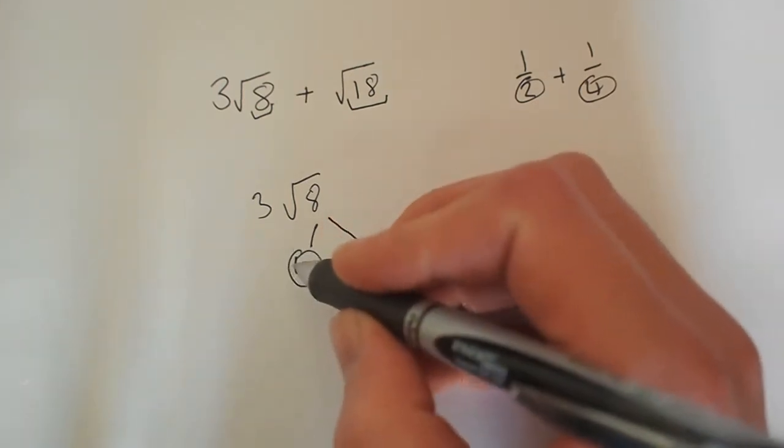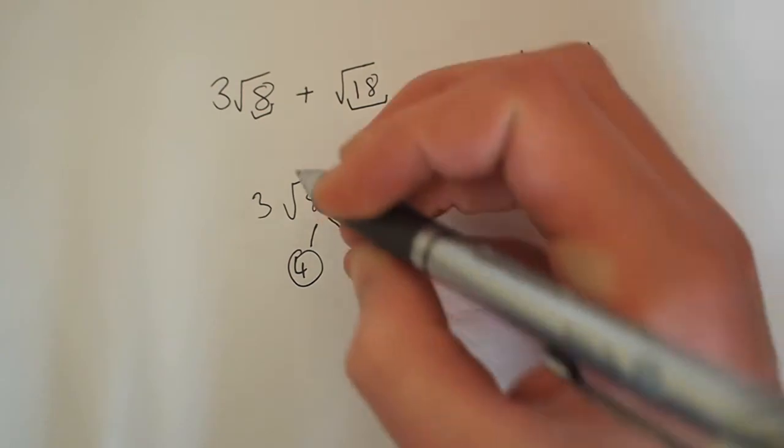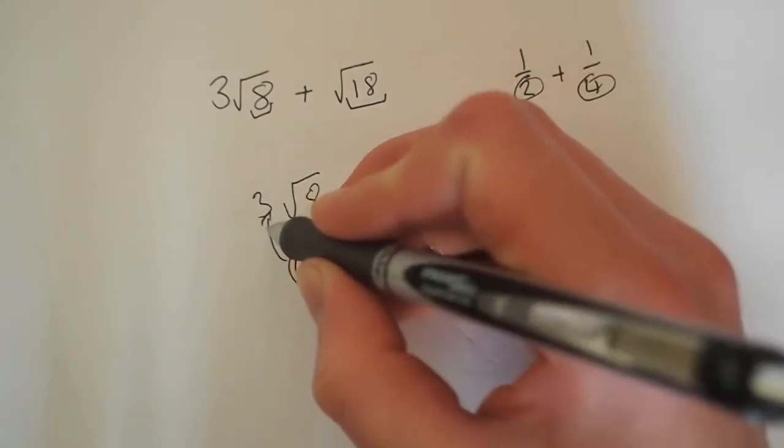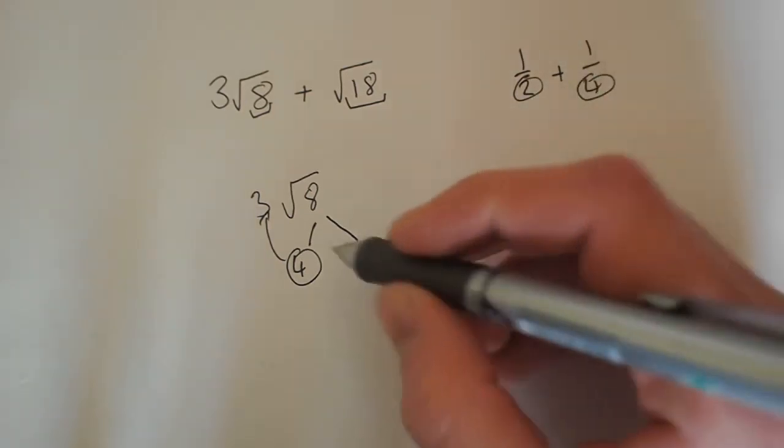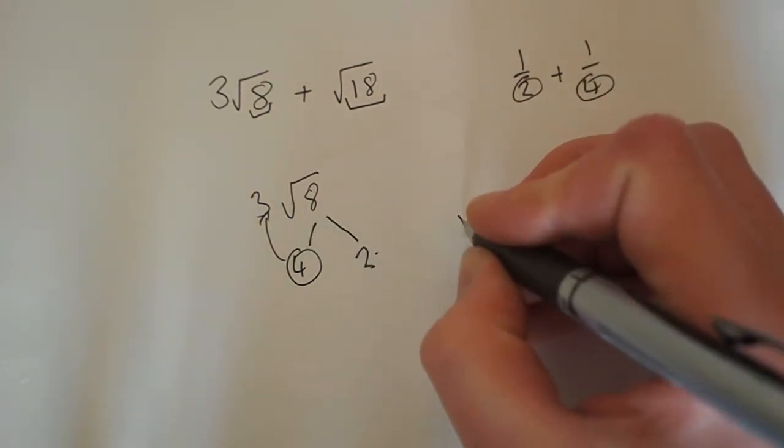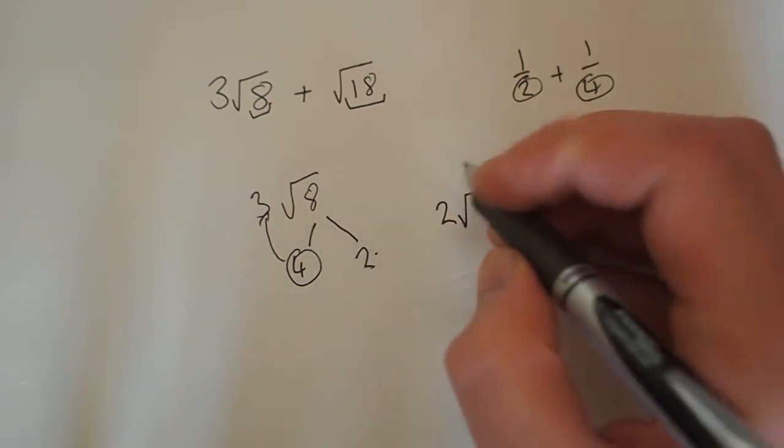So, like before, we took our square number and square rooted it so we get a 2. And then we take that and put it to the outside of our surd. And we multiply it. So we have 2, sorry, 6.